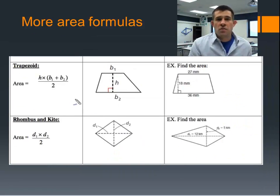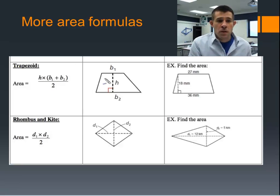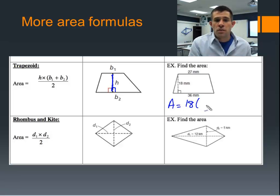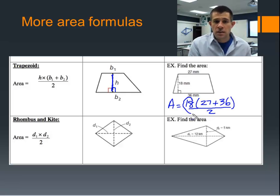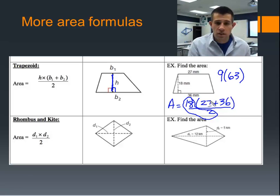The area formula for a trapezoid is height times the sum of the two bases, all divided by 2. In a trapezoid, the bases are the two parallel sides. The height goes between the two parallel sides. In our example, the height is 18, and we add the two bases: 27 plus 36. Then multiply by the height and divide by 2. Simplifying 18 divided by 2 first gives 9 times 63, which equals 567 millimeters squared.